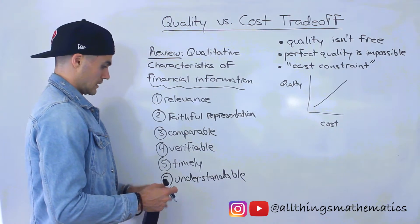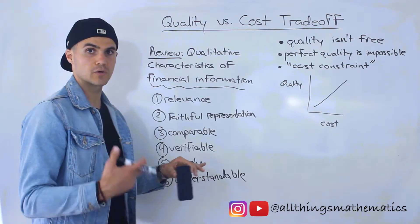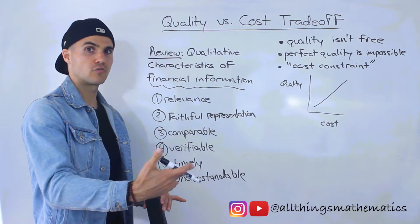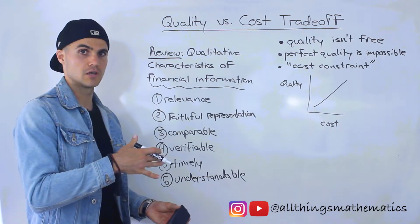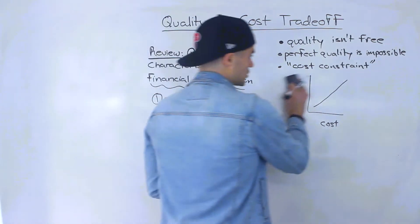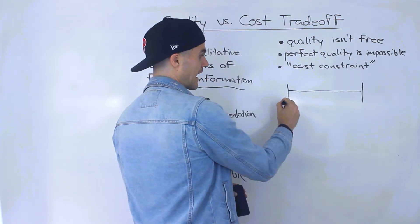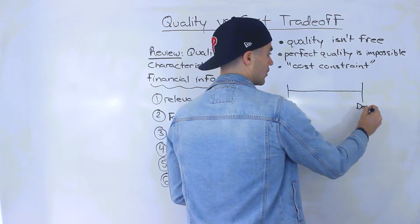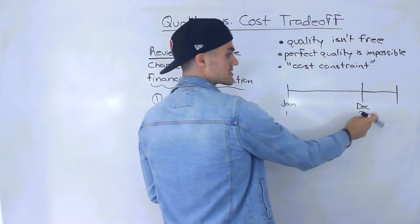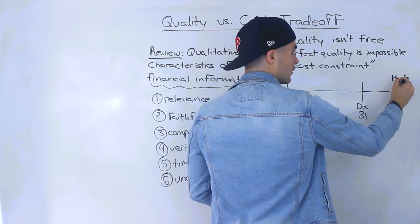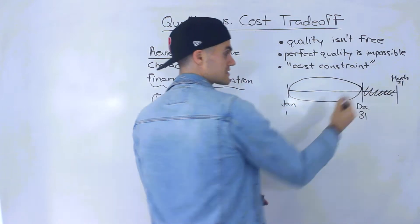To give you an example: if you remember when we discussed the timeliness characteristic — information is timely when it's provided in time to be relevant for users to make well-informed decisions, and older information becomes less and less relevant. If you take a large company with an annual period from January 1st to December 31st, they usually issue financial statements within three months of that year end, so by March 31st.